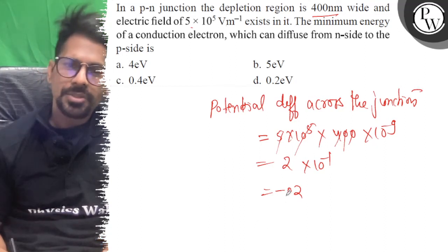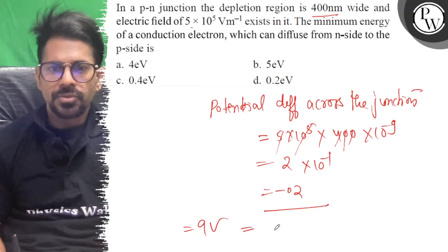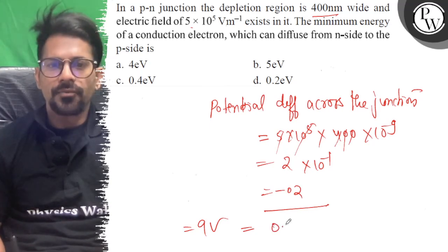So if it is negative potential drop, it is equal to the energy. Q into V is equal to 0.2 electron volt.